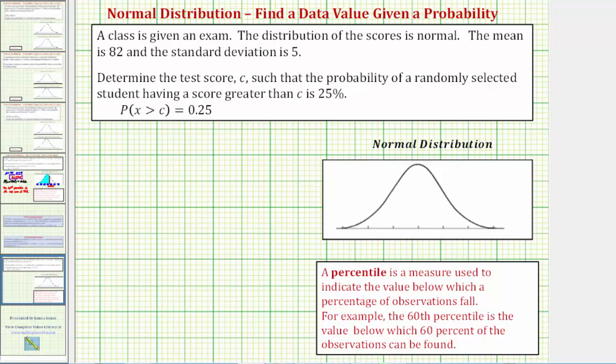Welcome to an example on how to use the TI-84 graphing calculator to determine a data value given a probability involving a normal distribution.